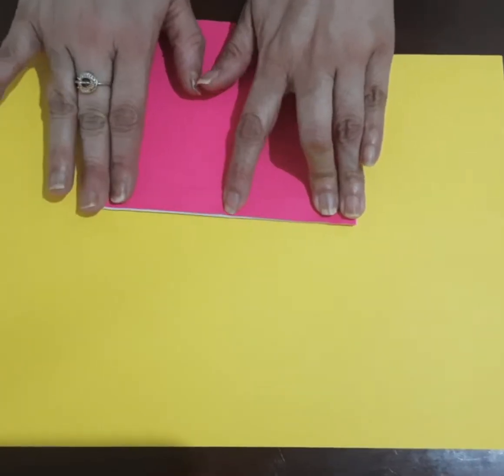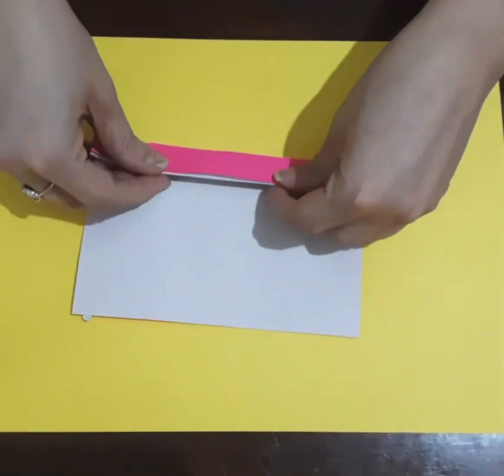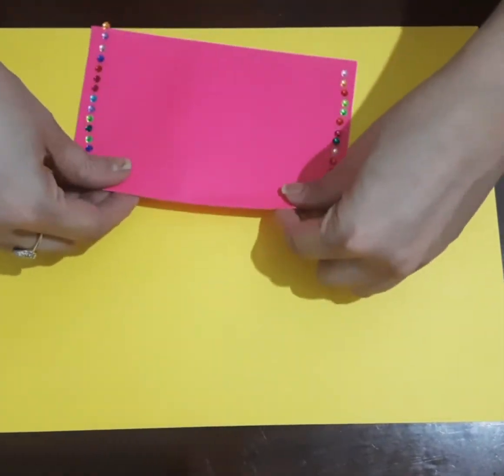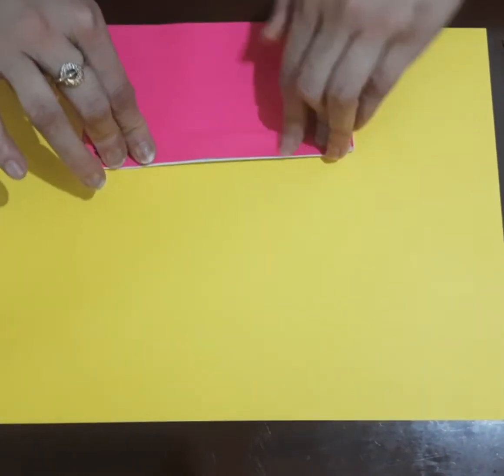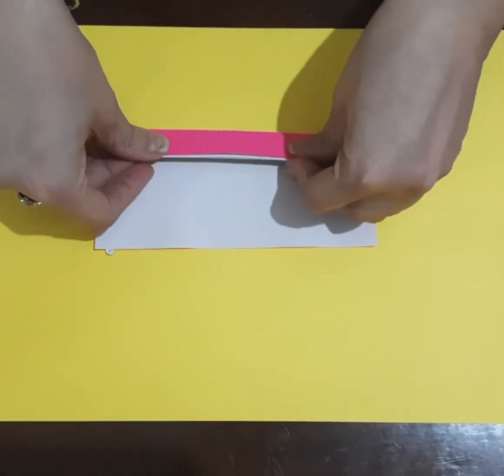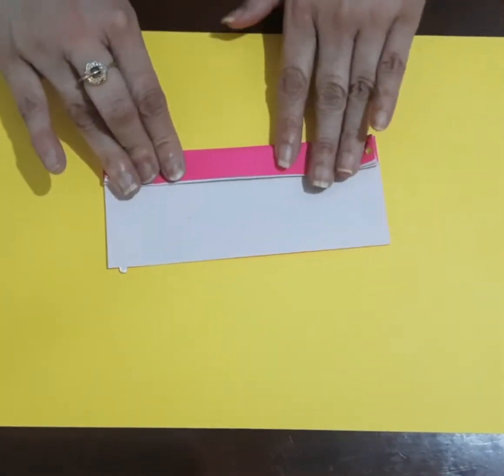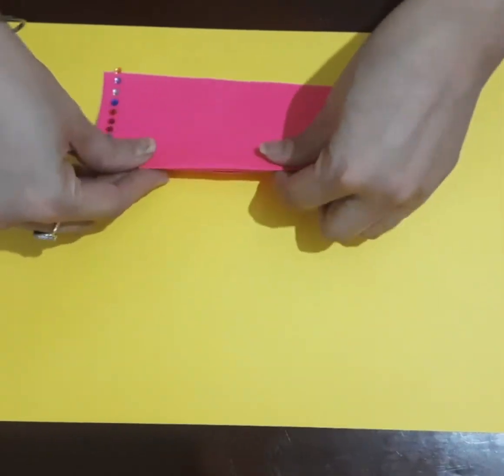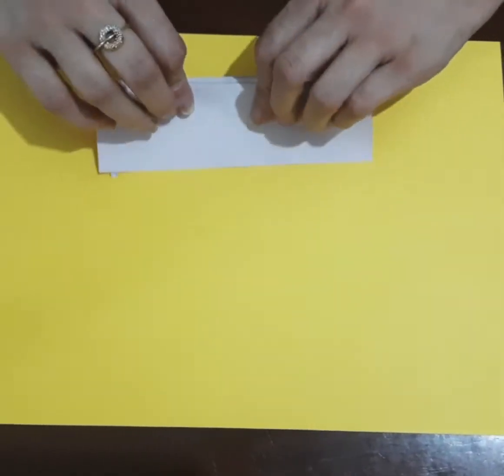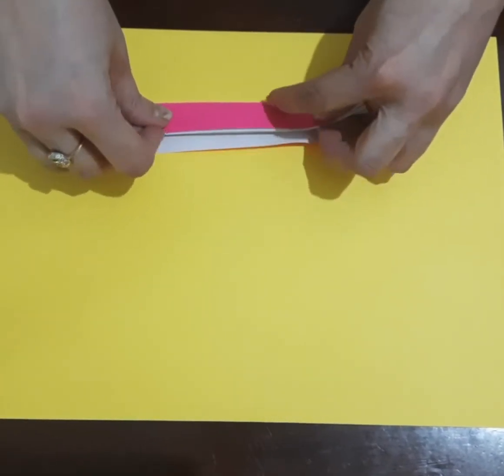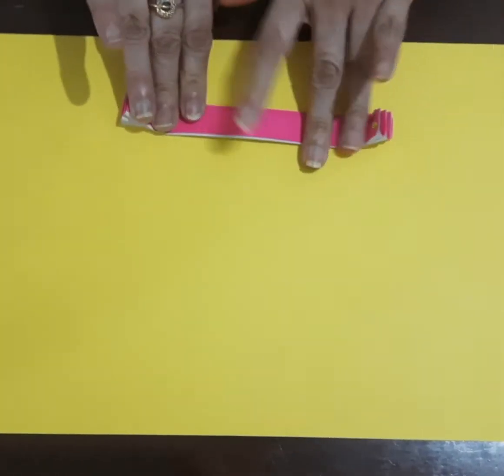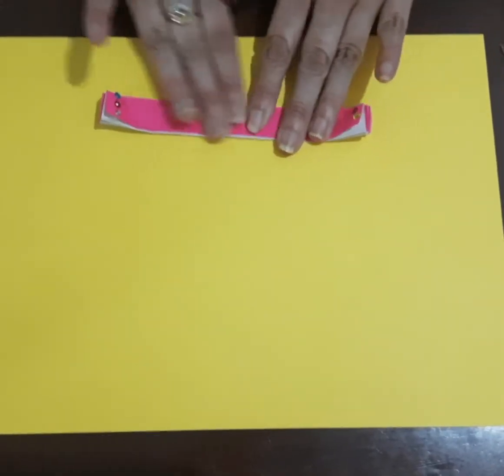We have to basically do the fan movement, folding it again, turning the paper and folding it. Keep turning and folding. The folds should be of equal width. Try to make them as equal as possible. Once we have folded them, press them nicely.